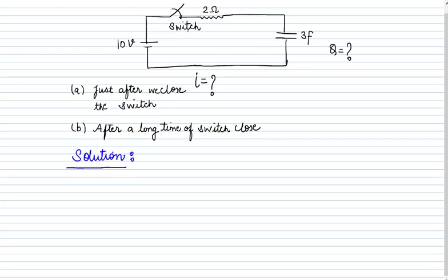When we just close the switch, the potential difference across the capacitor is zero, so the charge on the capacitor is zero. Since the potential difference is zero, both plates are at zero volts. These three points don't have any voltage source between them, so they are all at zero volts.